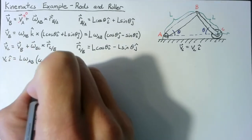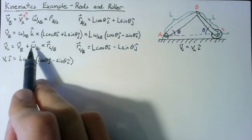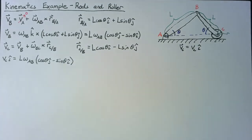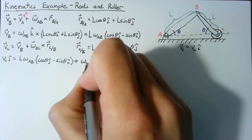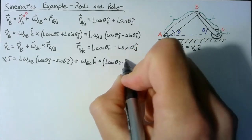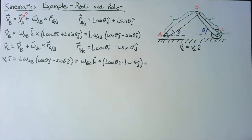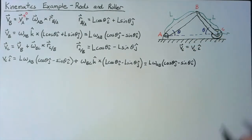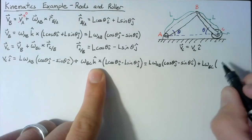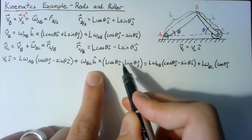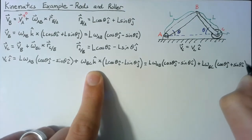VC in the i direction equals VB plus omega_BC k crossed into the position vector L cosine(theta) i minus L sine(theta) j. Resolving the cross products: k cross i is j giving cosine(theta) j, and k cross j is negative i but with the negative sign in the position it becomes plus sine(theta) i.